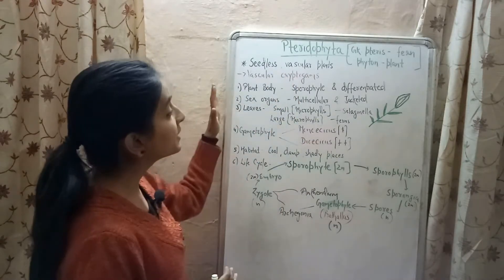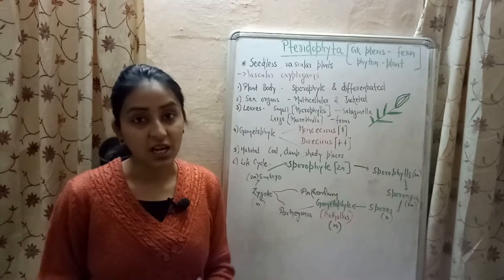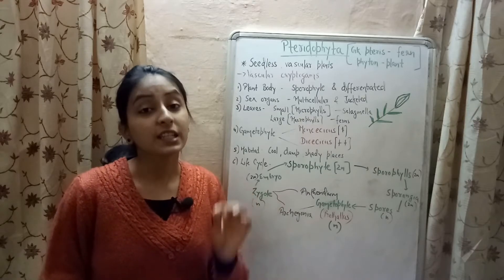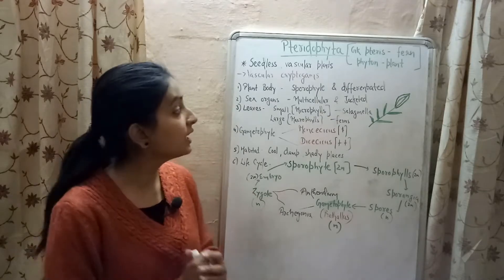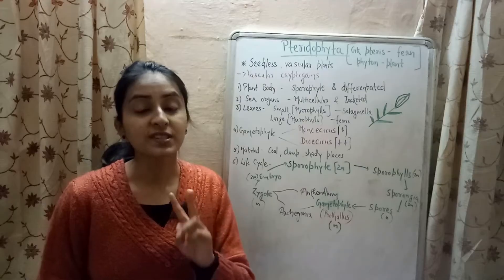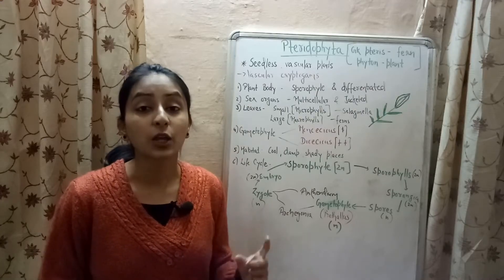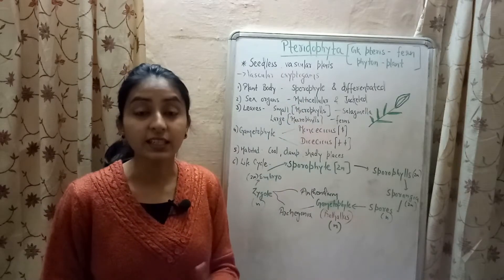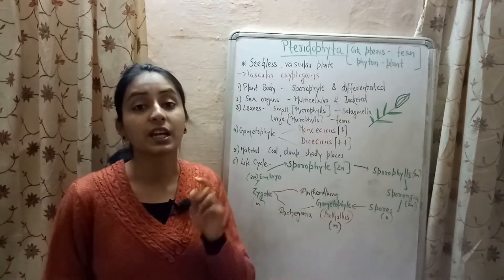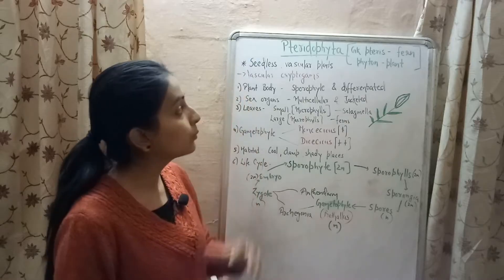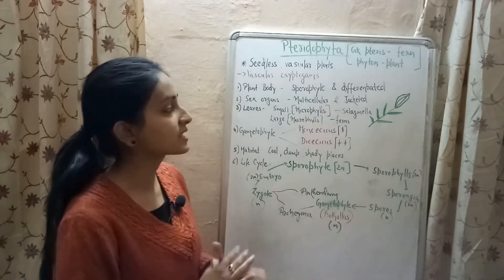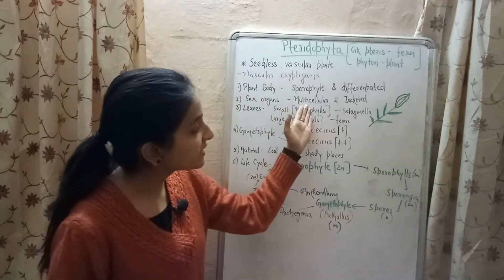Now, let's look at the basic characteristics. The main plant body is sporophyte, and it is well differentiated into various parts. We have roots, stems, and leaves. The reproductive organs are multicellular and jacketed — that is, they are covered and made up of multiple cells.